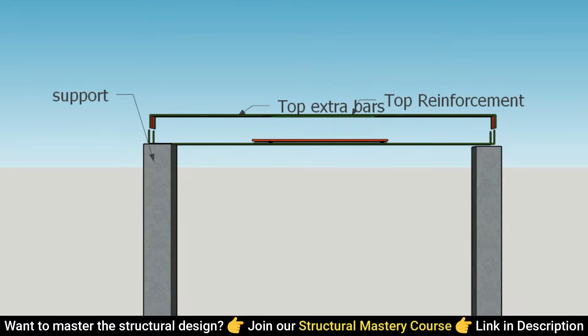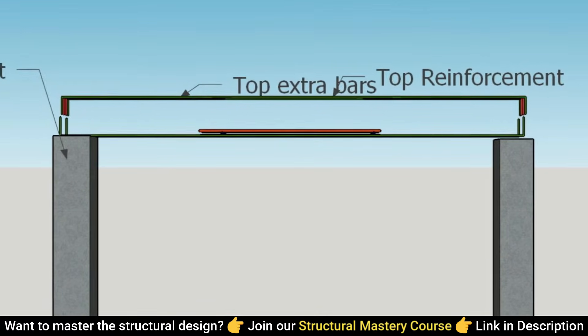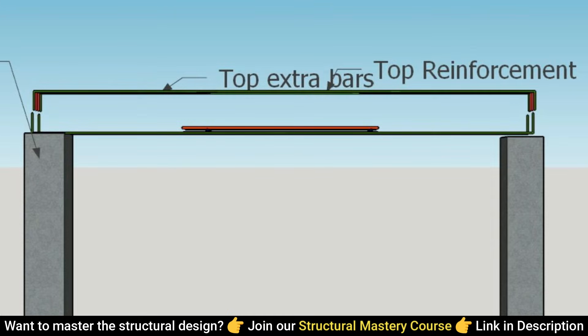If necessary, extra reinforcement can be introduced in a second layer below the top layer, usually extending by one-fourth of the span length from the column's face or as dictated by the design.